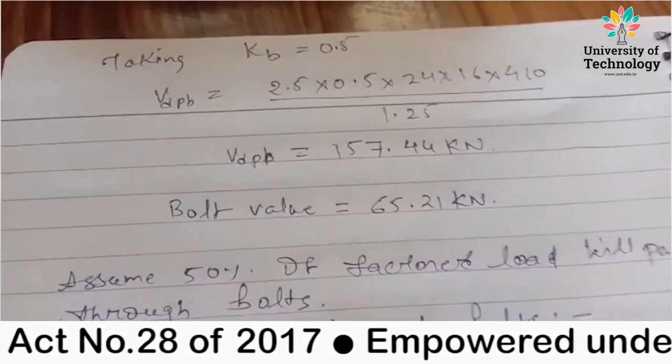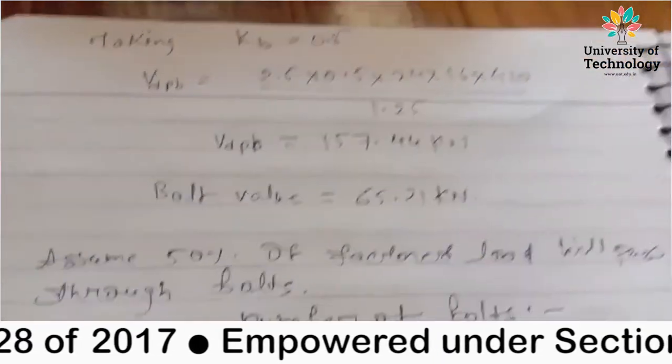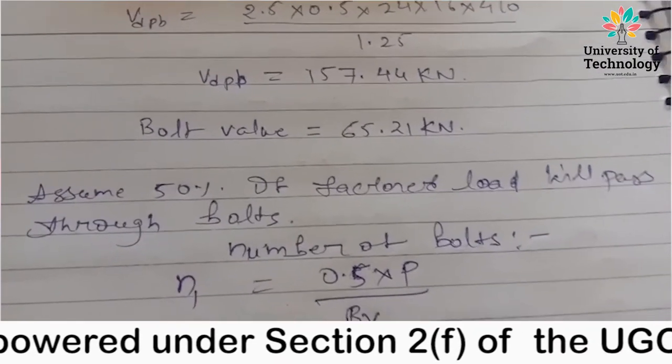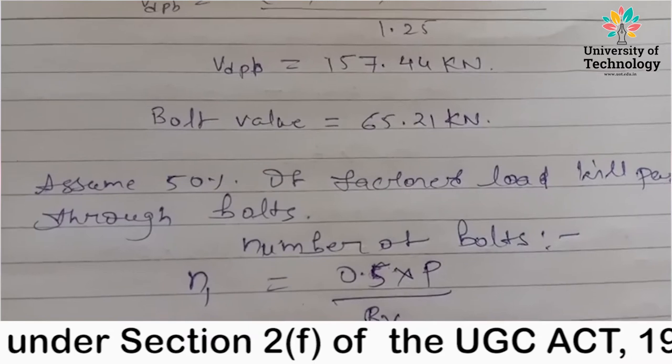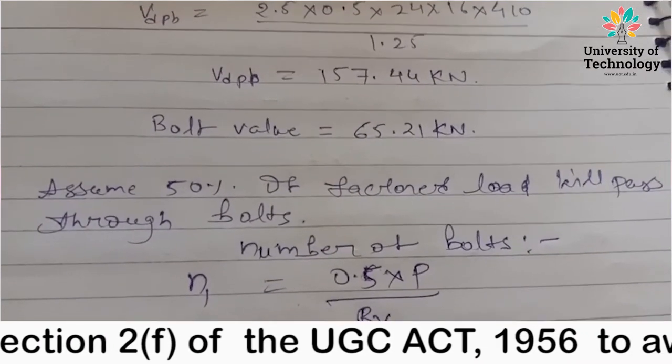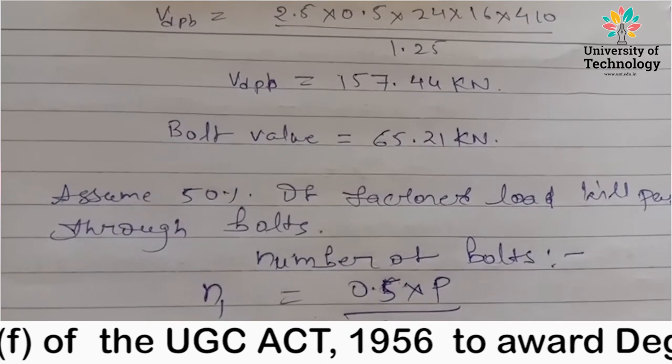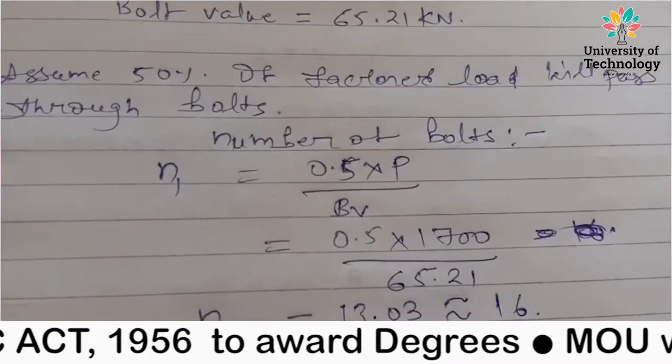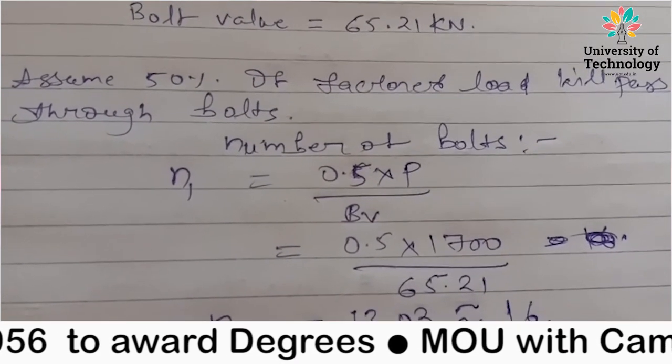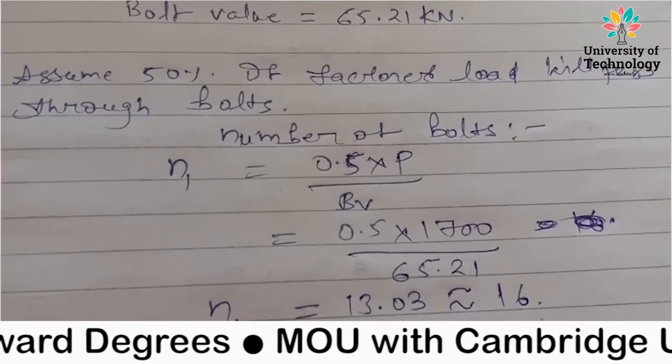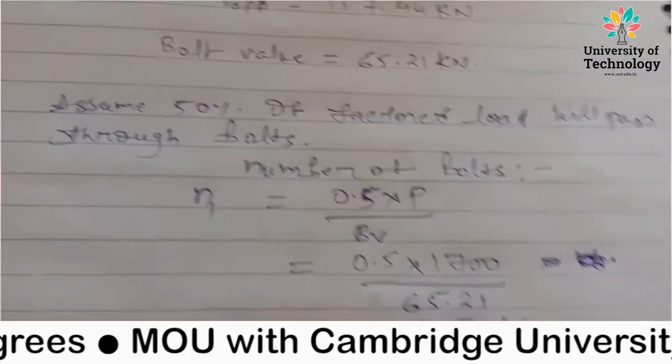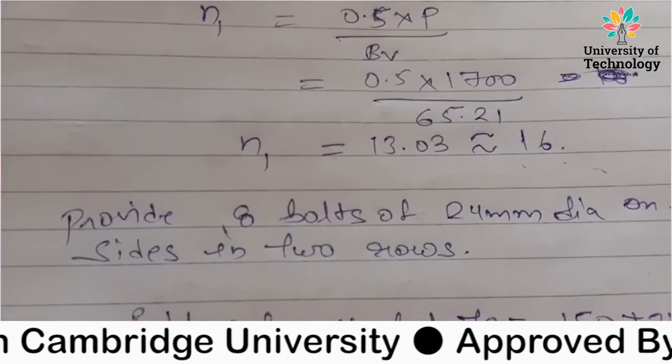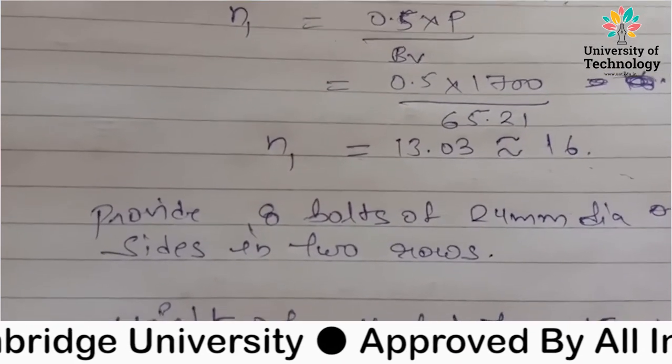Now, let's take the number of bolts. First, let's take the assumption that 50% of the factored load is on the bolts. Assume 50% of factored load will pass through bolts. So number of bolts, N1 equals to 0.5 into P upon bolt value. We will put the minimum value. We have 13.03, similar to 16. Now you can take 14, I have 16. So you need to take half. If you have 14, then it will be 7-7.